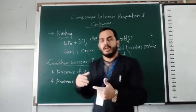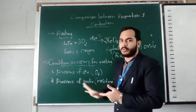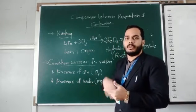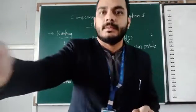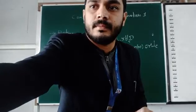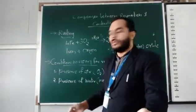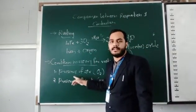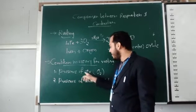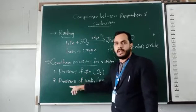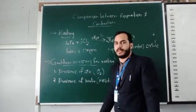Without either of these conditions, rusting is not possible. These are the two main conditions necessary for rusting: the presence of air and the presence of water or moisture.